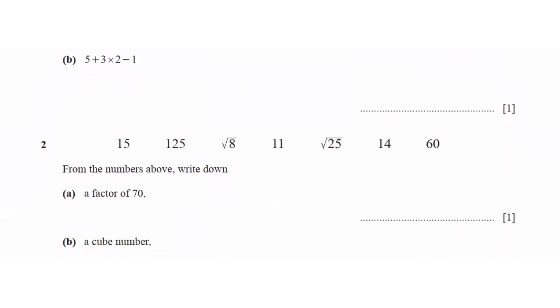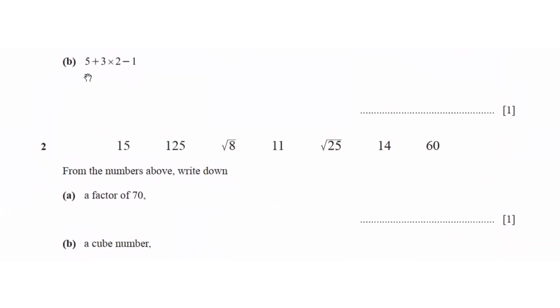Part B says 5 plus 3 times 2 minus 1. This is BIDMAS. First we do brackets, if there are any.